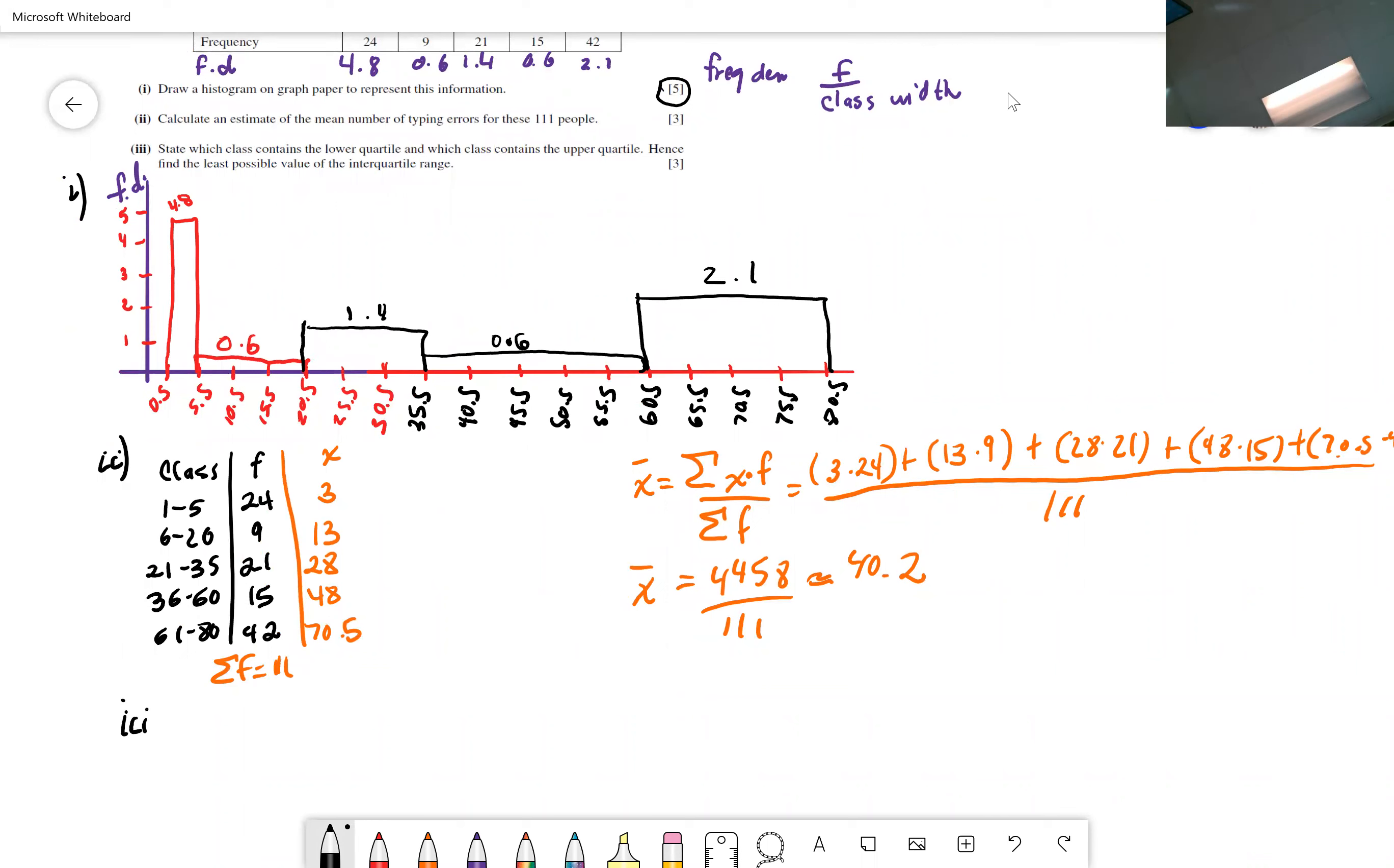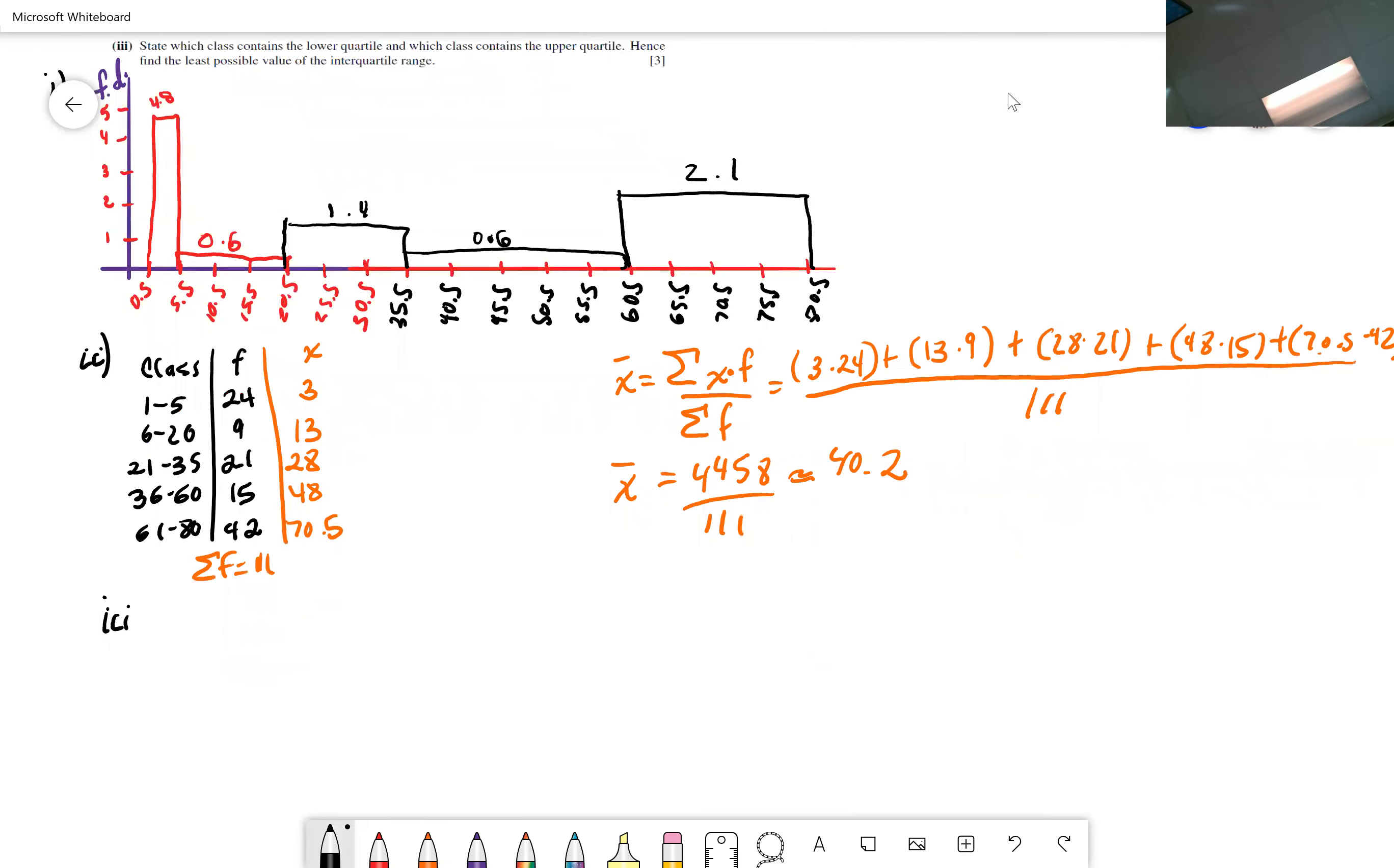So let's see if we can do the third one. It says, state which class contains the lower quartile and which class contains the upper quartile. Hence, find the least possible value of the interquartile range. Now, I'm going to rewrite the table up here, the grouped frequency distribution. The best way to see where the quartiles are is by doing my cumulative frequency.